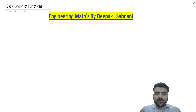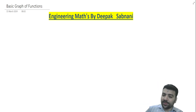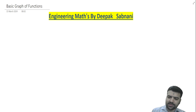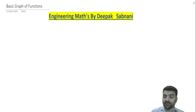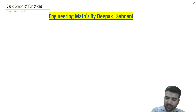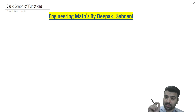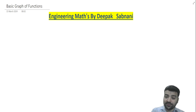Hi everyone, welcome to Deepak Samrani's YouTube channel. In the last class we discussed y equal to x to the power n and plotted the graph when n is 2m, that is even numbers — y equal to x squared, x to the 4th, x to the 6th — and also when n is odd, that is 3, 5, 7 — x cubed, x to the 5th, and so on.